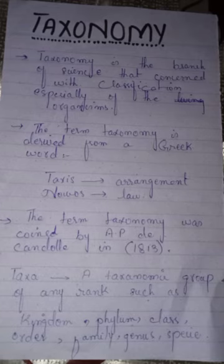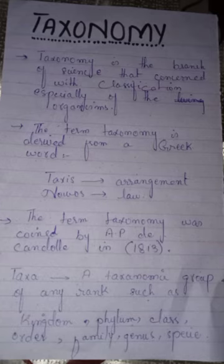Plants and animals are characterized into different taxa. A taxon is a taxonomic group of any rank, such as kingdom, phylum, class, order, family, genus, or species. So plants and animals are characterized into different taxa. The exact definition of taxonomy is that it is the branch of science concerned with the classification, especially of organisms.